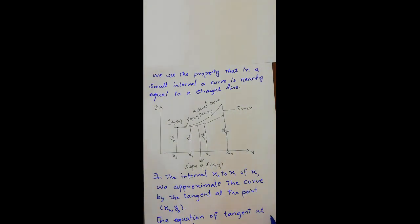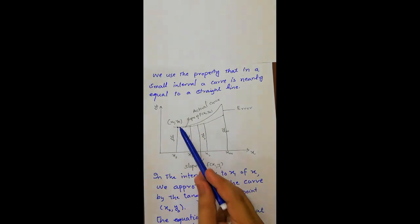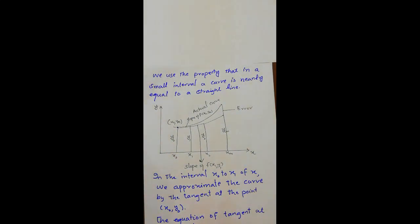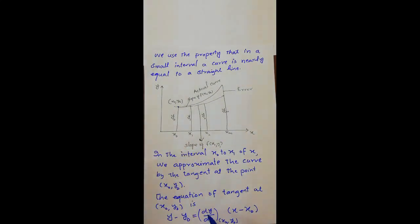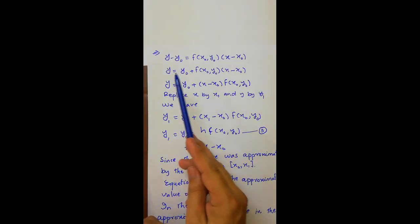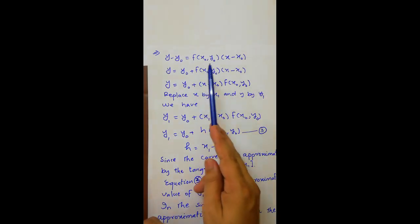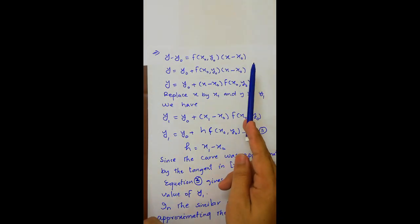The equation of the tangent at the point x0, y0 is y minus y0 equals dy by dx at x0, y0 times x minus x0. Then y minus y0 equals f of x0, y0 times x minus x0.